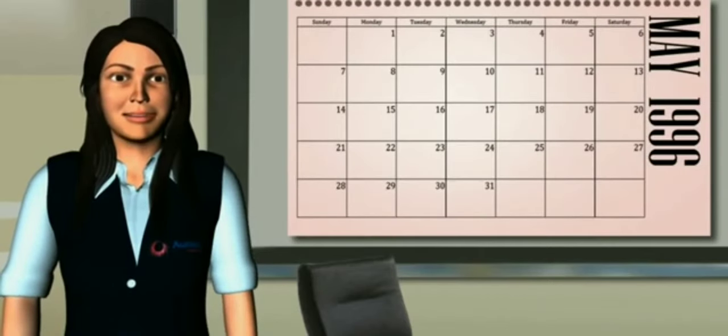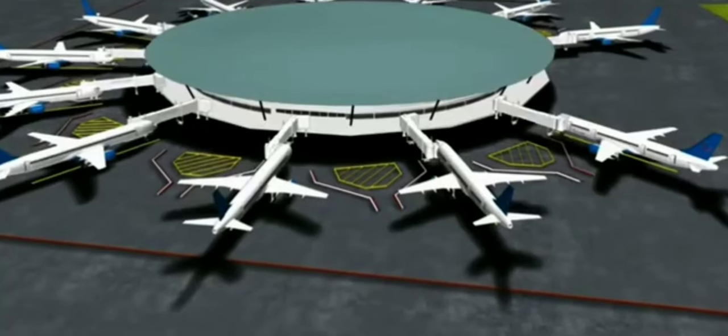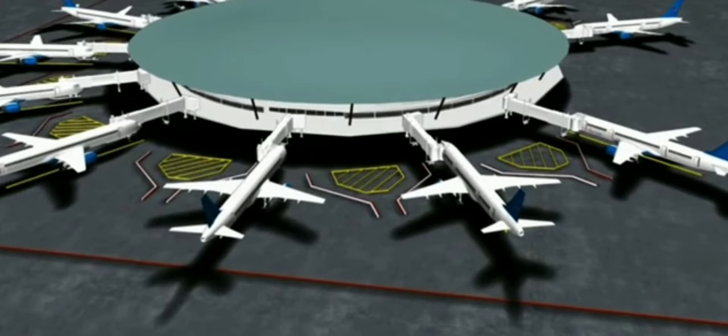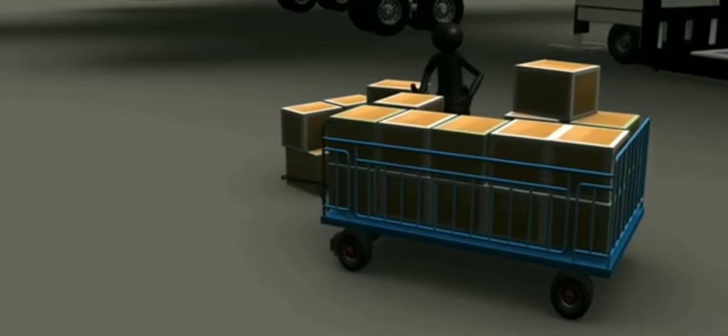To better understand the risks these dangerous goods pose, let's examine the following accident. On May 11, 1996, at Miami International Airport, a ValuJet flight was being prepared for takeoff. A cargo loader placed a few boxes of 144 out-of-date oxygen generators loosely packed in bubble wrap around an aircraft tire in the cargo hold.